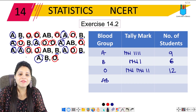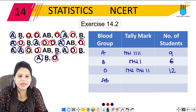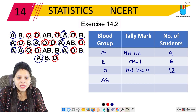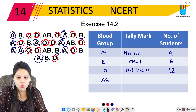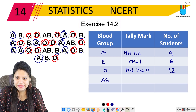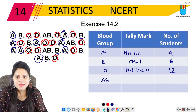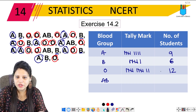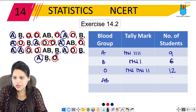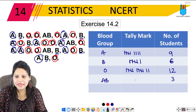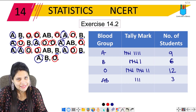Now for blood group AB — all the remaining children. Counting: 1, 2, 3 — we have 3 students with blood group AB. Let's verify: 1, 2, 3. So this is 3.